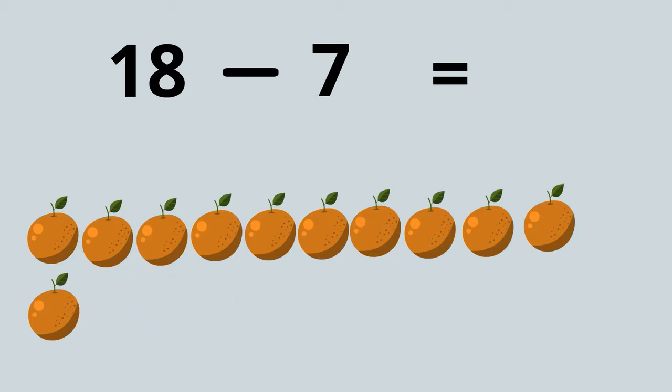8, 9, 10, 11. It's 11. 18 take away 7 equals 11.